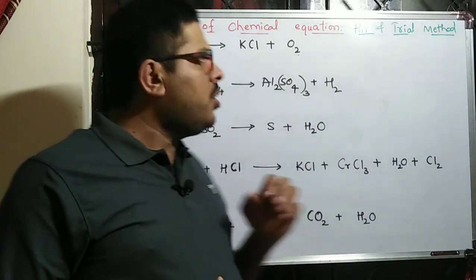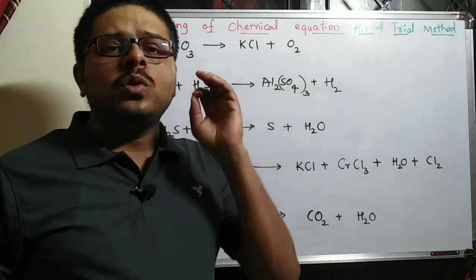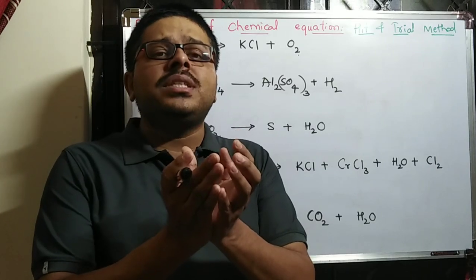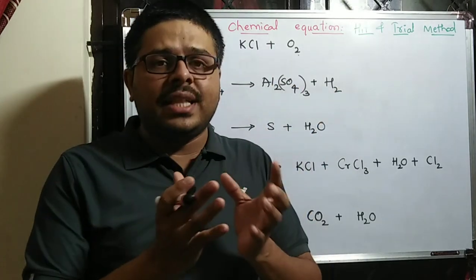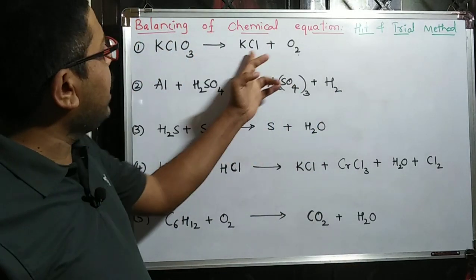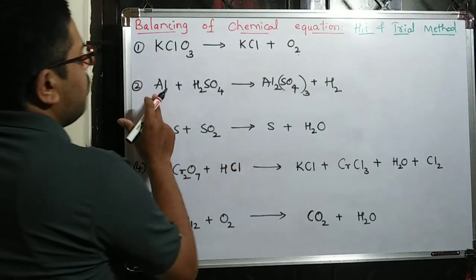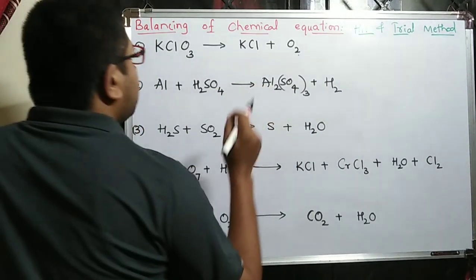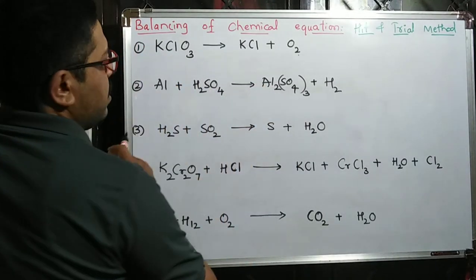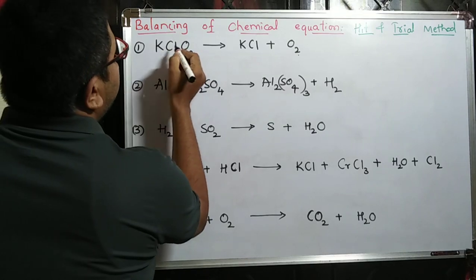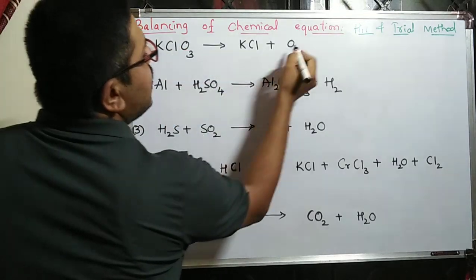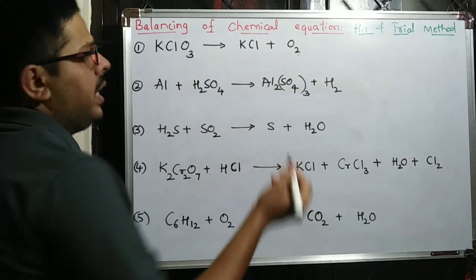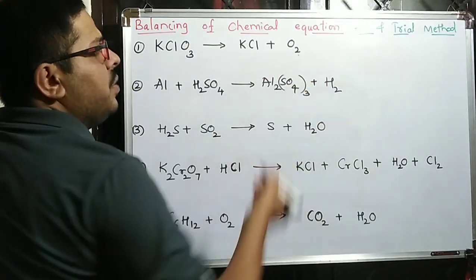To balance, you have to select the largest molecule — the one with the most atoms. For example, KClO3 and KCl: the largest one is KClO3. In KClO3 there is one potassium, one Cl, and three oxygens. In the product O2 there are two oxygens — that is an even number. Three is odd, so you cannot directly calculate. Here it is odd, here it is even, hence you have to make the odd side even as well.